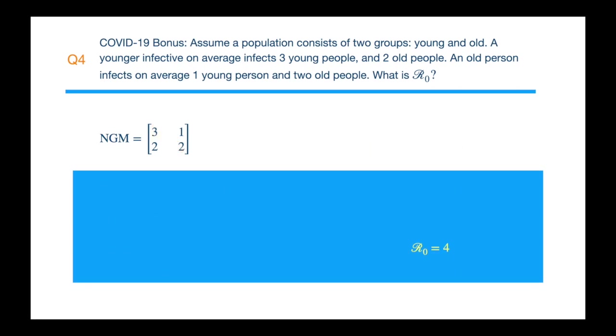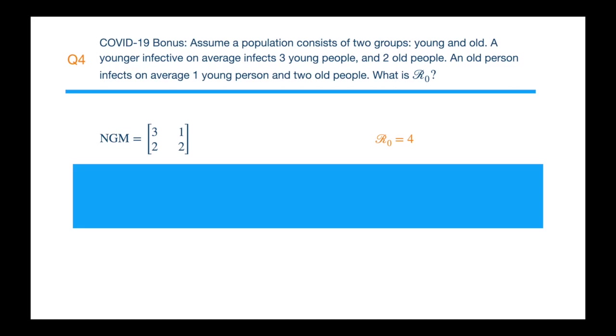Now, what does this R₀ represent? An average growth from one generation to the next. So assume we start with one young infective and zero old infectives. If we pre-multiply this vector by the next generation matrix, we get the next generation distribution of infectives.